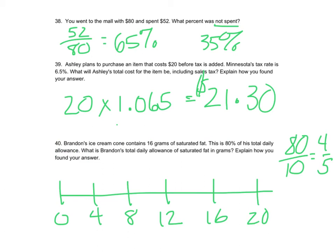Let's take a look at number 38. You went to the mall with $80 and you spent 52. What percent was not spent? I underline that because it's not asking what was spent, it's what was not spent. So I put 52 over 80, did a quick division. That gave me 65% of the money was spent. So now 100 minus 65 gives me 35% was not spent.